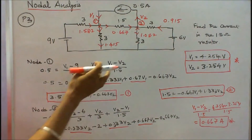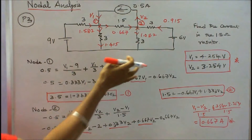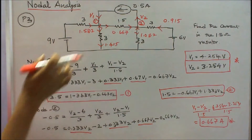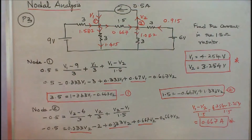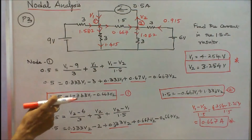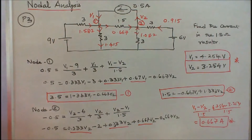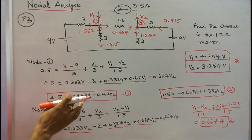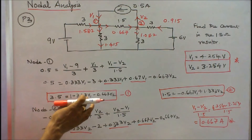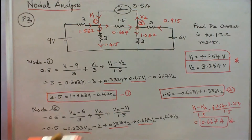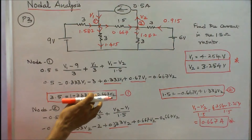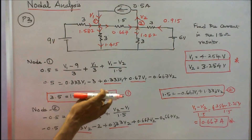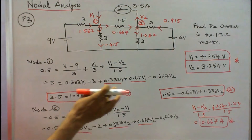At node 1, with V1 as higher potential: 0.5 equals (V1 minus 9) divided by 3, plus V1 by 3, plus (V1 minus V2) divided by 1.5. Simplifying gives: 3.5 equals 1.333 V1 minus 0.667 V2. This is equation 1.